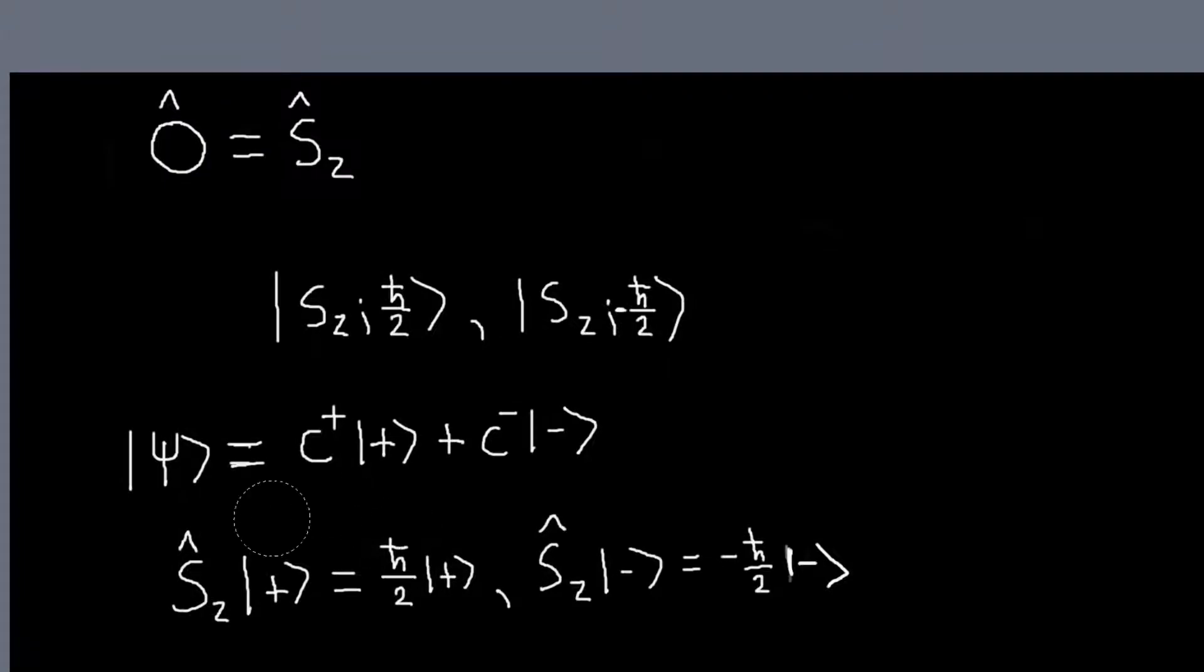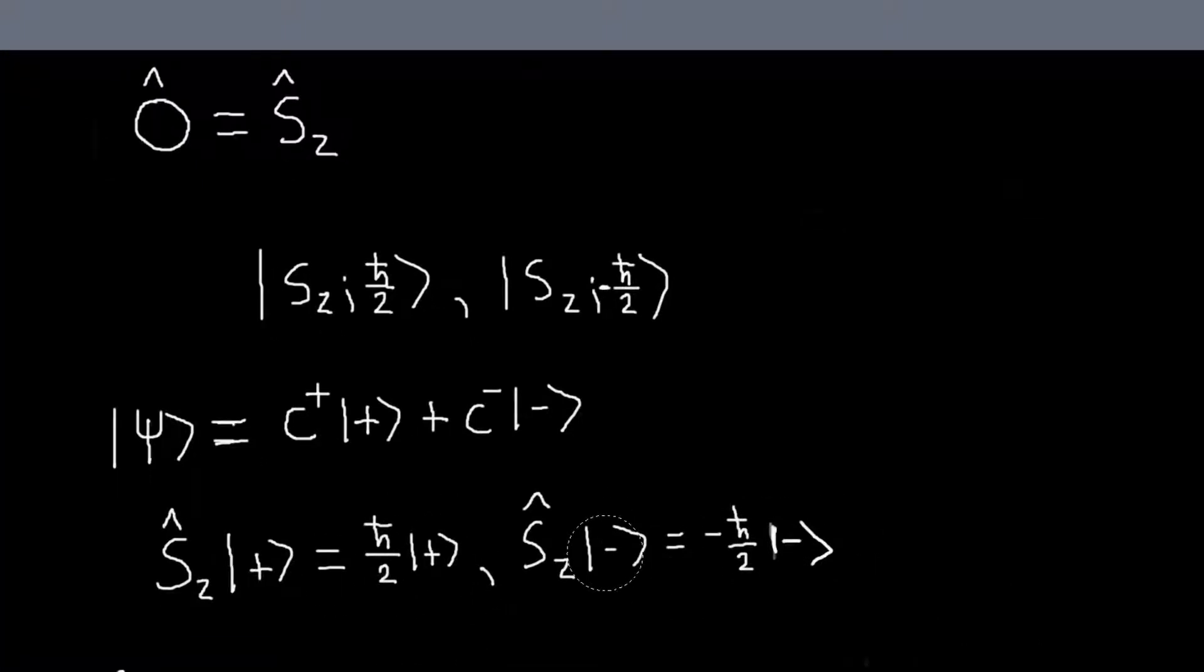And we will have these eigenvector eigenvalue equations, so Sz acting on the plus gives you the eigenvalue corresponding to the plus state, which is h-bar over two times plus, and similarly Sz on minus gives you minus h-bar over two times minus.